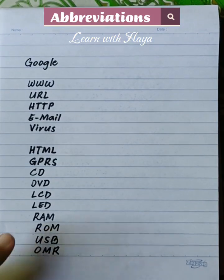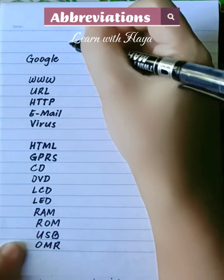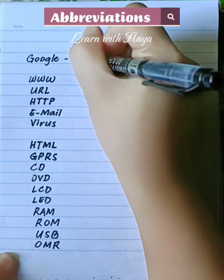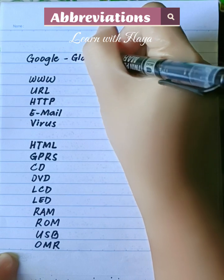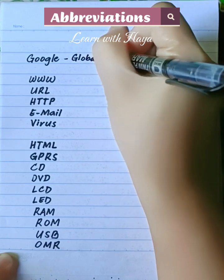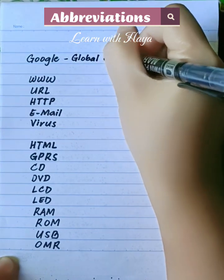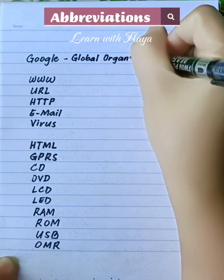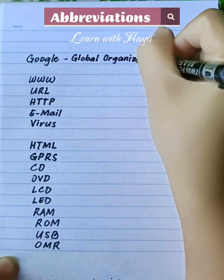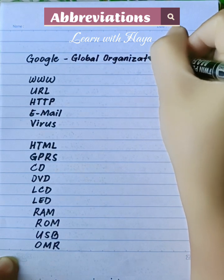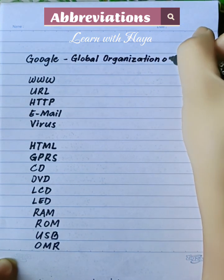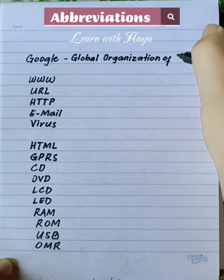Abbreviations and their meaning. GOOGLE: Global Organization of Oriented Group Language of Earth.